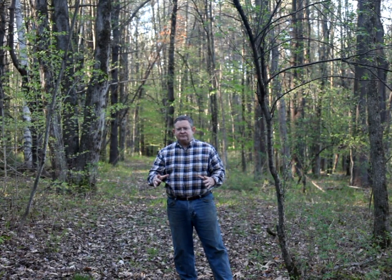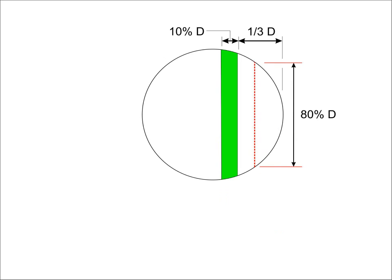That stress will be approximated as the weight of the tree divided by the cross-sectional area of the trunk. For instance, assume that a trunk with an area of 100 square inches supports a tree weighing one ton. The stress would be 2,000 pounds divided by 100 square inches or 20 pounds per square inch. When the notch and back cut are made, the supporting area is reduced to that of the hinge alone.